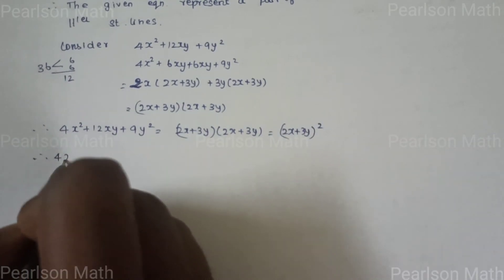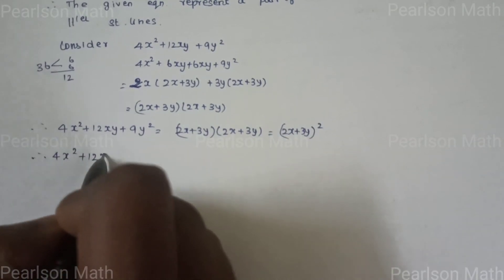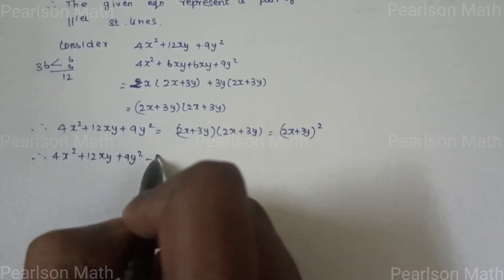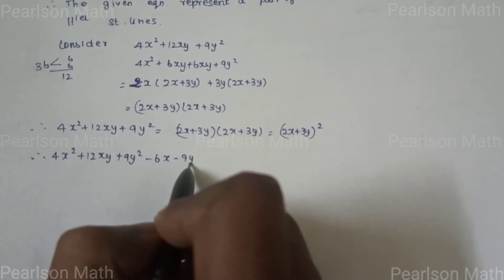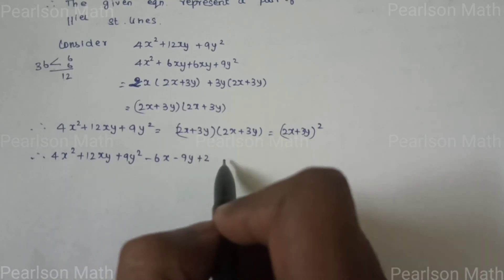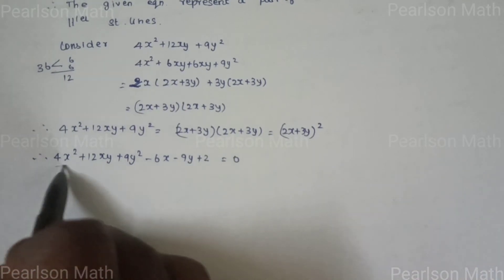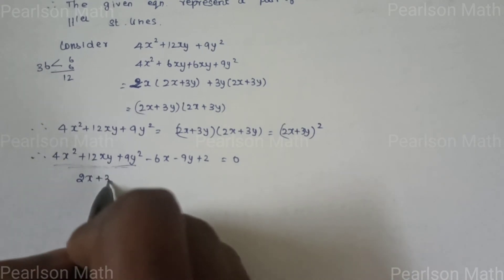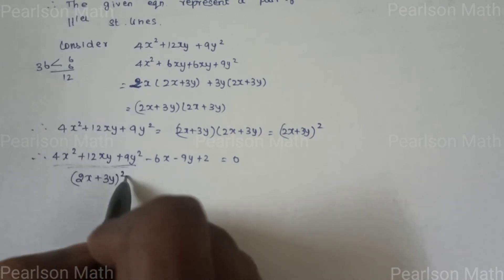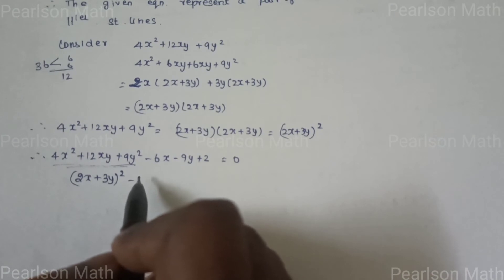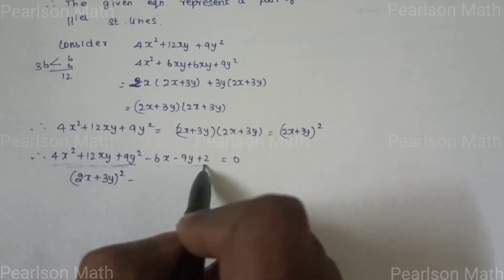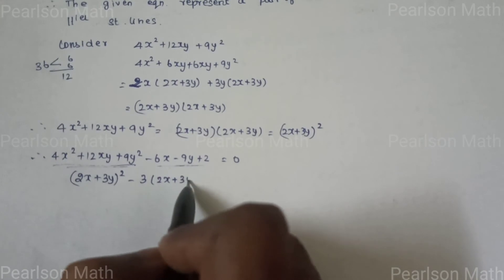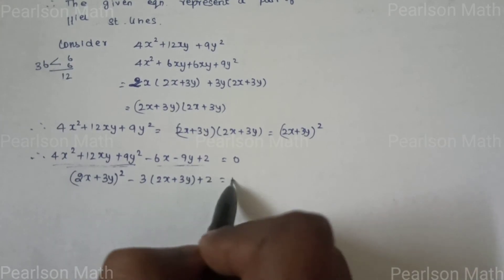The full equation is 4x² + 12xy + 9y² - 6x - 9y + 2 = 0. We now have (2x + 3y)² in place, and the remaining terms are -6x - 9y, which can be written as -3(2x + 3y), plus 2 = 0.